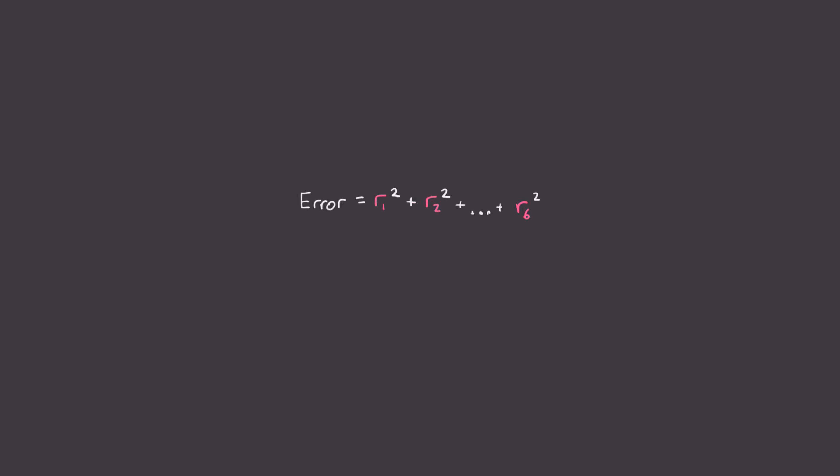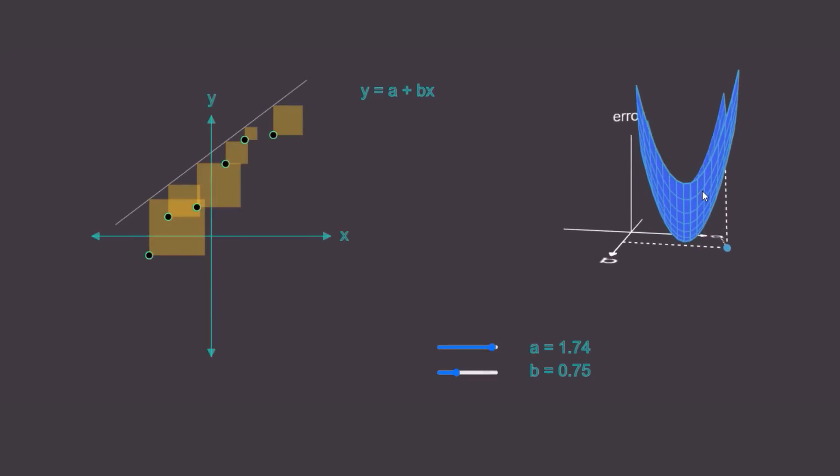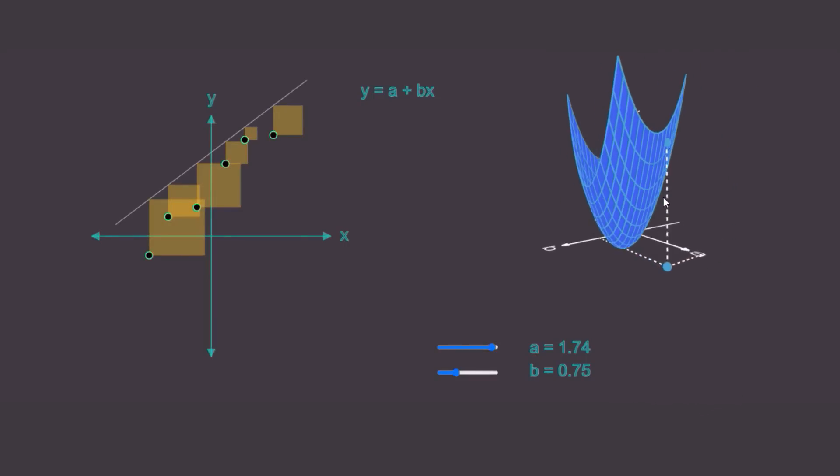For example, the error term we just derived, r1 squared plus r2 squared plus on and on to rn squared, can actually be written more compactly as the dot product of the r vector with itself, r transpose r, which can also be written as the 2 norm of ax minus b. Okay, but that's enough about that. Let's take a step back and focus on the problem again. Now, as it turns out, remarkably, when we plot this error, we'll get this multi-dimensional parabola called a paraboloid. As you can see, the error is plotted against our parameters a and b.